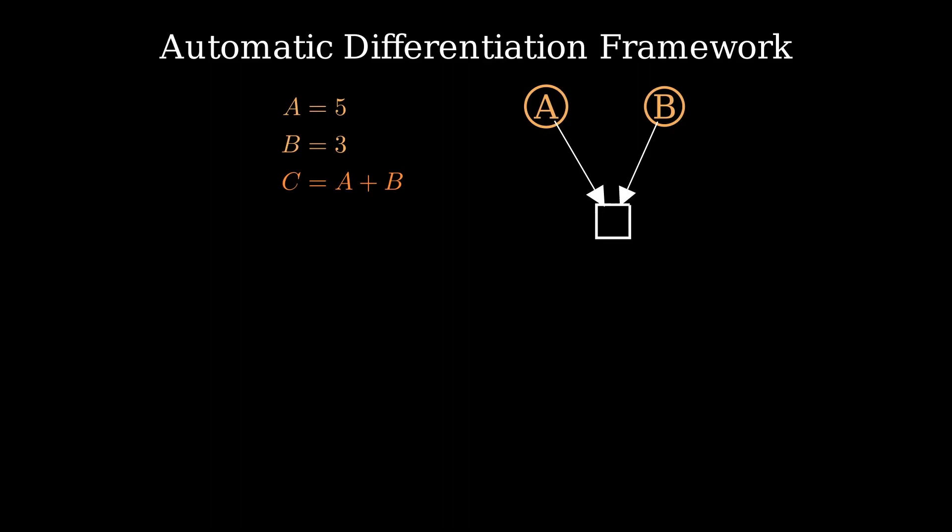What happens on the graph is that it first logs the operations performed on A and B which is addition here and then create an intermediate node to represent C. To make things a little interesting let's multiply C with B to get the final output D.